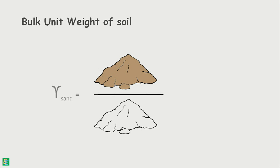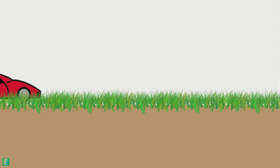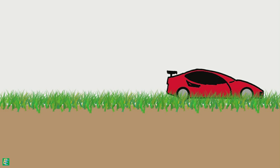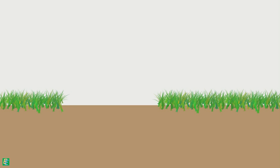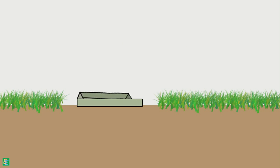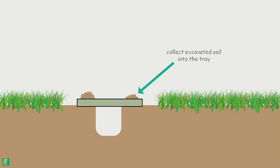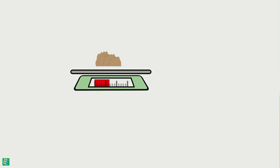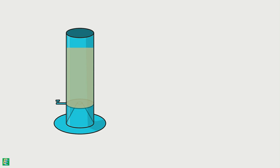Now come to the field where the soil's unit weight needs to be estimated. Clean and level a small area on the ground. Take a metal tray with a central hole and place it on the clean surface. Excavate the ground through this hole using a knife to a depth of roughly 15 centimeters and collect all the excavated soil into the tray. Then collect all that excavated soil and take its weight, noted as the weight of excavated soil.